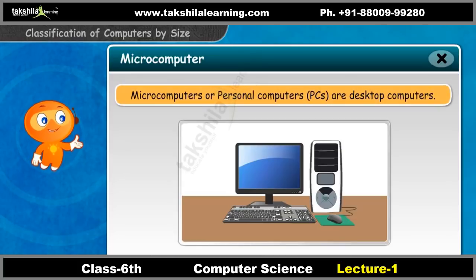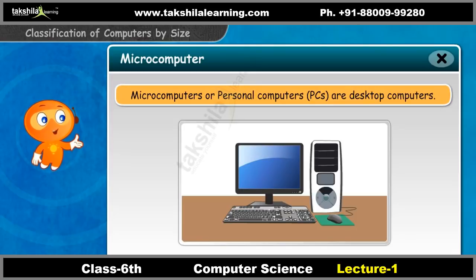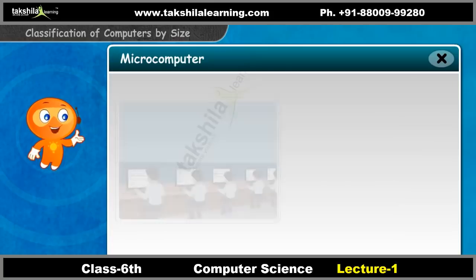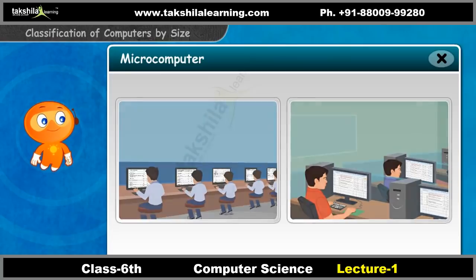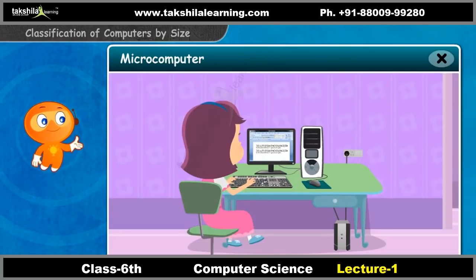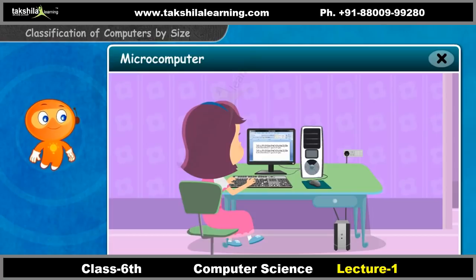Desktop computers are microcomputers. These are also called personal computers, or PCs. Schools, offices, and colleges frequently use microcomputers. Microcomputers are small computers, and only one person can use them at a time.